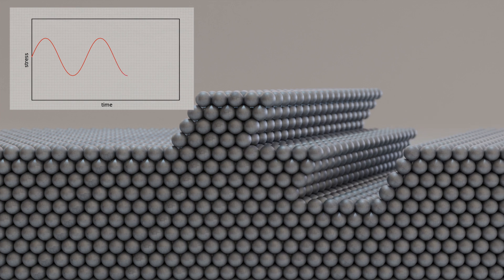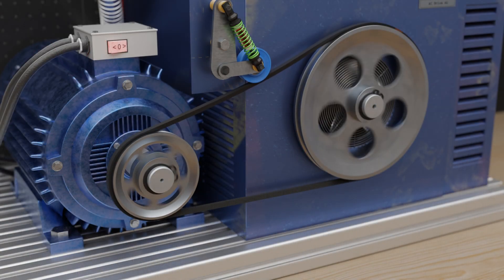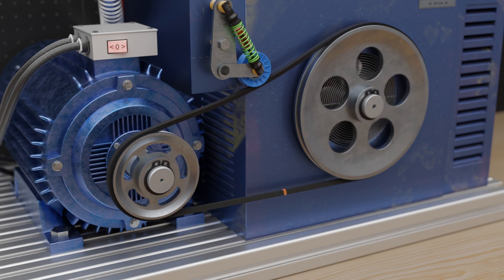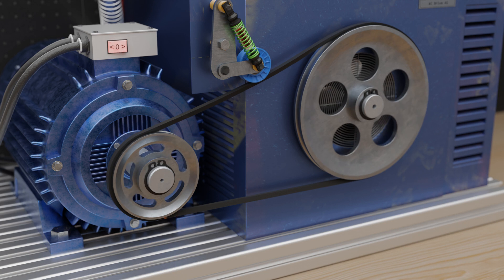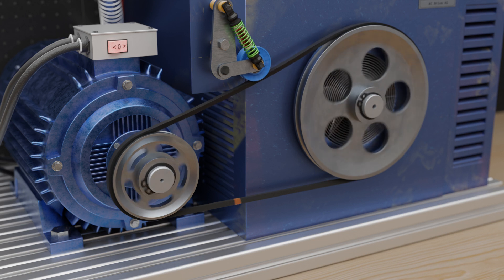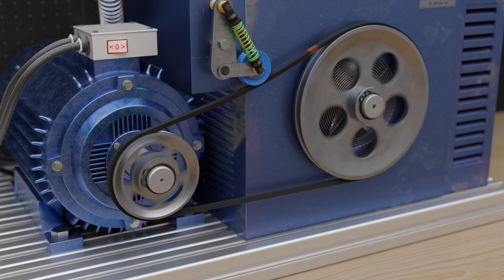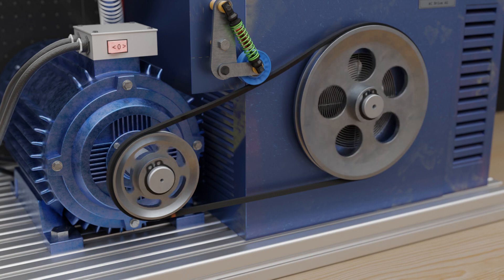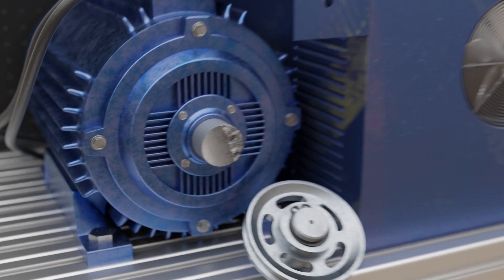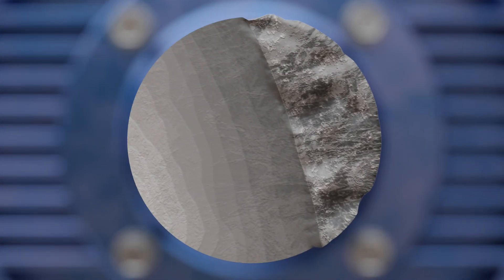This crack propagation marks the onset of fatigue fracture. However, numerous load cycles will usually take place before the final fracture occurs. As the crack spreads, the load-bearing cross-section decreases, distributing the load over an ever-smaller area. Sooner or later, the decreasing cross-section will no longer be able to withstand the stress. The tensile strength is exceeded in the remaining cross-section and the component finally fractures. Depending on the material, the fracture surface shows the typical characteristic of a brittle or ductile fracture as known from the tensile test.